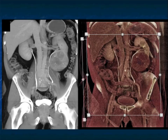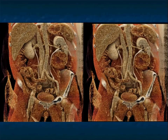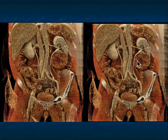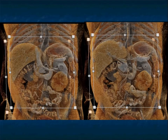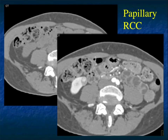Here it is on the excretory phase with both volume rendering and cinematic rendering. On the cinematic, you nicely see the tumor, the central necrosis, normal versus abnormal enhancement, and infiltration of the lower pole of the left kidney by the tumor. Simply changing some parameters gives you a little bit more information.